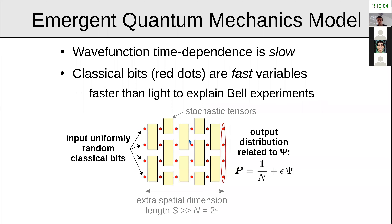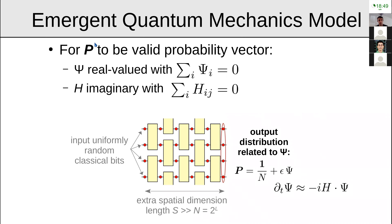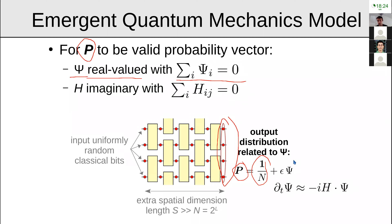In this model, those faster-than-light degrees of freedom are the classical bits running around the extra dimension, which explains consistency with Bell inequality experiments. For the probability distribution to be valid, the wave function must be real-valued and its elements must sum to zero — since the uniform distribution sums to one, psi must sum to zero. The Hamiltonian must also satisfy constraints: it needs to be imaginary with rows and columns summing to zero.